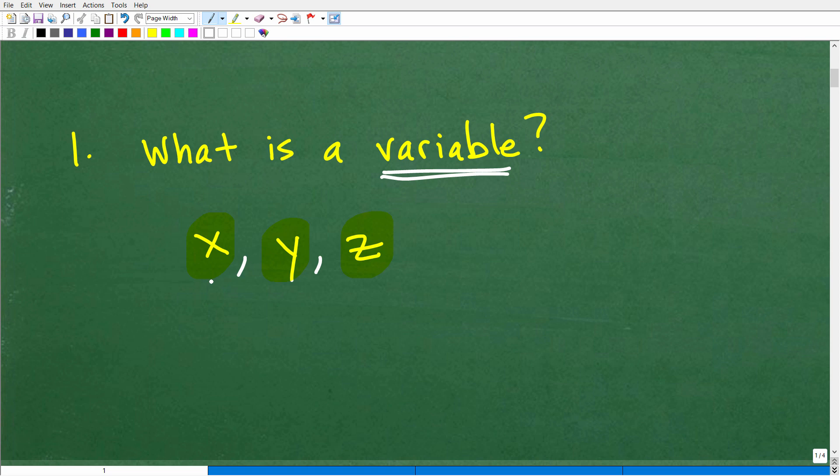But there's no hard and fast rule that says that variables always have to be letters. They do not. They could be other symbols as well. But a variable is a symbol that represents a number. So again, X would be some number. Y is another number. Z is another number.